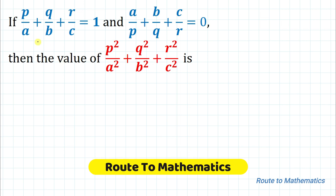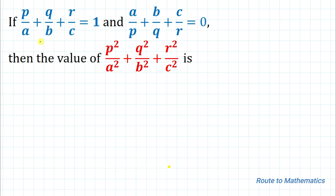Hello everyone, welcome to Root 2 Mathematics. In this video we're going to solve an interesting question on algebra. The given question is: p/a + q/b + r/c = 1, and a/p + b/q + c/r = 0. Then the value of p²/a² + q²/b² + r²/c² is?